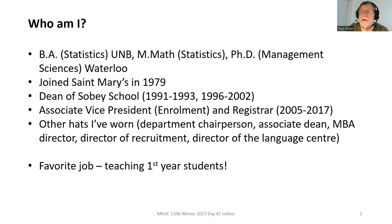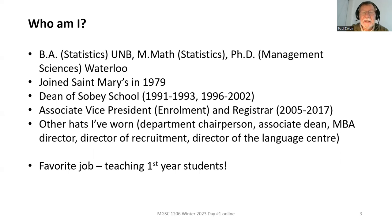Despite not having a business background, I did become dean of the business school on an acting basis from '91 to '93, and then after things didn't work out with the person they hired as dean, I came back and did it for another six years, from '96 to 2002. I also got dragged back into administration as associate vice president enrollment registrar for a dozen years, and I've worn lots of other hats — department chair, associate dean, MBA director, director of recruitment, director of our language center.